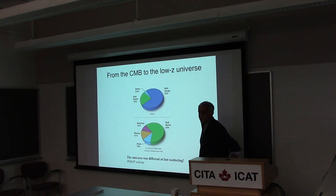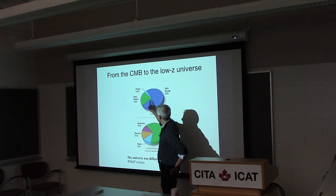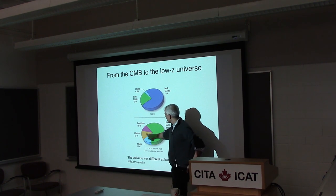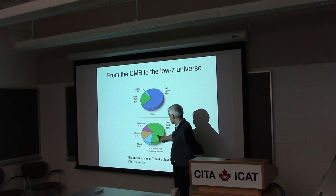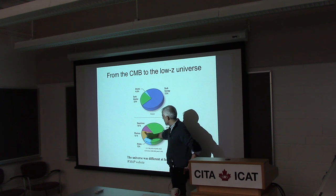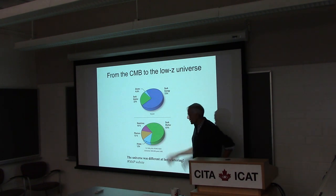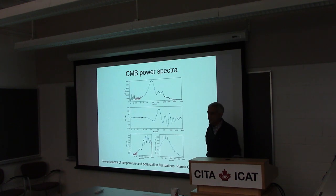If you look for resolutions and say it's not some nasty systematic in the data but new physics, then this is a good place to start. The universe today is mostly dark energy, then dark matter, then baryons. Any early universe measurements are looking at a very different composition — there's no dark energy for any standard model, it's negligible at last scattering, and it's mostly dark matter with a respectable showing by photons and neutrinos.